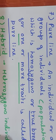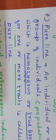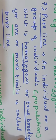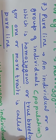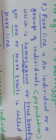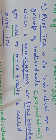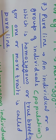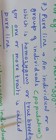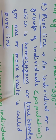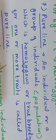This is the homozygous and heterozygous condition. Next is pure line and hybrid as genetic terminology. Pure line: an individual or group of individuals which is homozygous and true breeding for one or more traits is called a pure line.